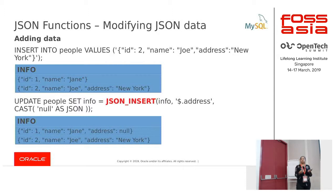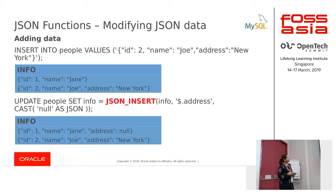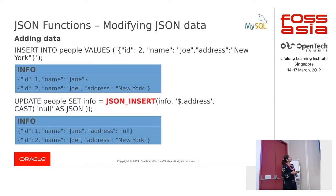In the real world, data keeps changing. Say the old data has only ID and name, but new data also has an address. The new data that came in has an additional member called address. Now we want to insert this member into the old data where the existing JSON doesn't have this address member. You use the JSON_INSERT function. It takes three arguments: the JSON document to be updated, the path to be inserted, and the value. What JSON_INSERT does is search the documents — if the path you specify is not found, it inserts the path and initializes the value with whatever you have given.